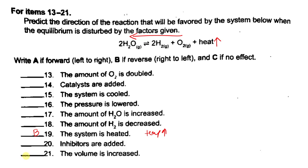Number 20: inhibitors are added. Inhibitors are like the opposite of catalysts — they inhibit or slow down reactions. Just like catalysts, inhibitors slow down both the forward and the reverse reaction. So overall, it will have no effect on the equilibrium. The answer is C.